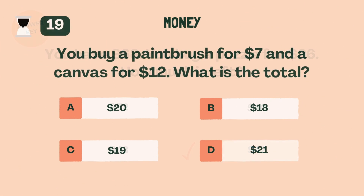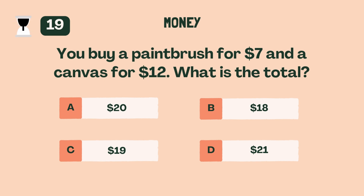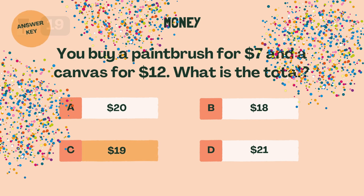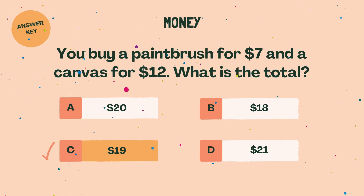You buy a paintbrush for $7 and a canvas for $12. What is the total? C. $19.